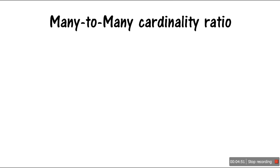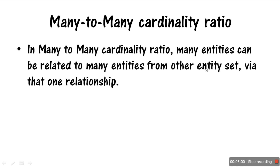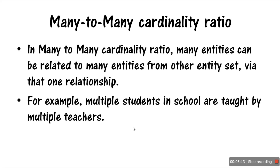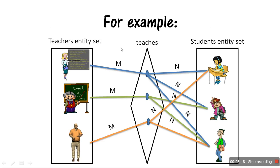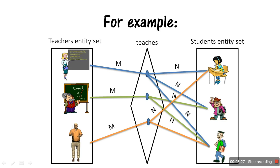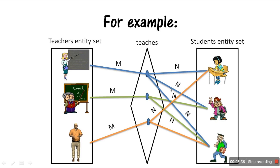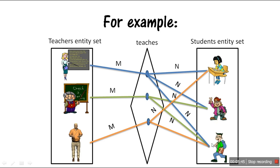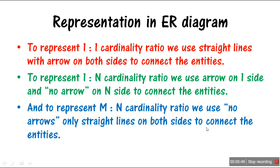In many-to-many cardinality ratio, many entities can be related to many other entities from another entity set via that one single relationship. For example, we have multiple students in a class taught by multiple teachers. One teacher can teach multiple students, and those multiple students can learn from multiple teachers — not necessarily one teacher only. This is what many-to-many cardinality ratio means.